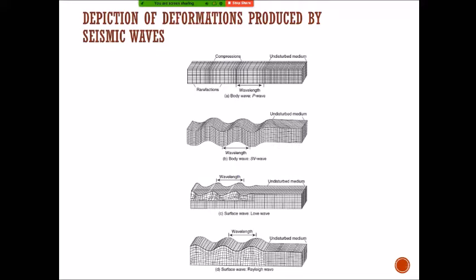The first picture on the top shows the compression — that is the P wave or body wave — which travels as a compression and relaxation cycle. Then you can see how it becomes undulated as a surface wave. The Love wave is a lateral movement type — it moves along the surface laterally. The Rayleigh wave below is a ripple — like when you drop a stone on a water pond and you see a ripple in an undisturbed medium.